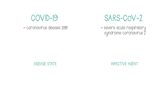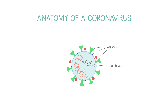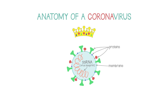SARS-CoV-2 is a bit of a mouthful, so we shall hereby refer to it as the coronavirus. The coronavirus comprises a single strand of RNA, which is the blueprint for how to make a coronavirus, inside a membrane with some proteins in it. These spiky proteins look a little like a crown under an electron microscope, which is presumably why it's called a coronavirus, corona being the Latin for crown or wreath.